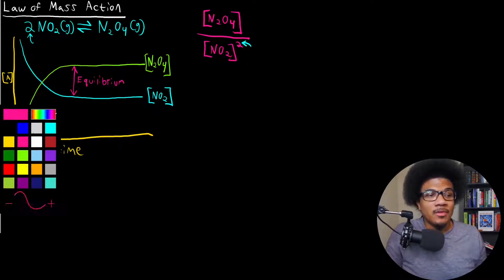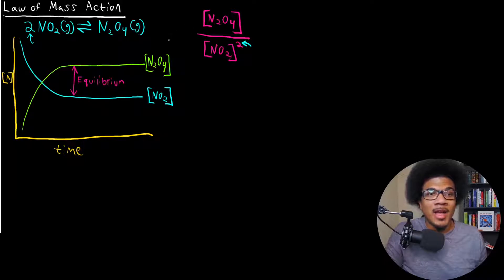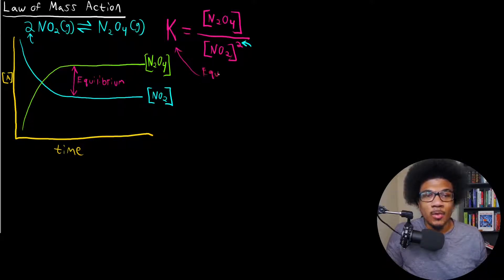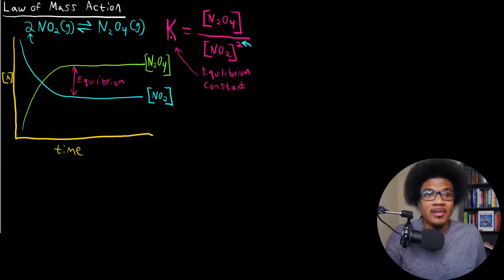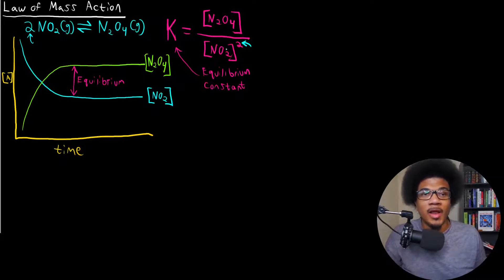This ratio is known as the equilibrium constant, and we use the variable capital K to denote it. This ratio of the concentrations is actually a constant that is indicative of every single chemical reaction.